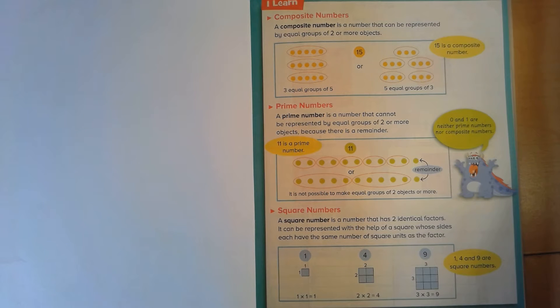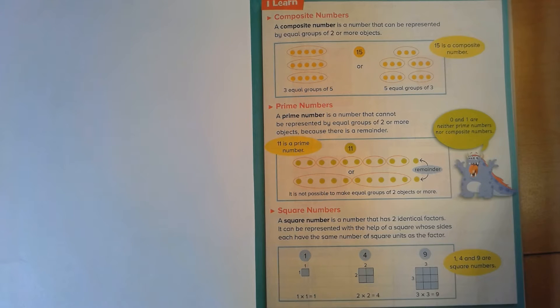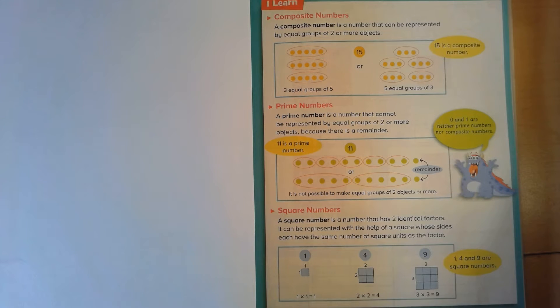Hi there, it's Diane. Welcome to my basement. Today we are just gonna be labeling numbers. We're gonna say if numbers are composite, prime, or square. So what's the first question you should ask yourself? What's a composite number? What's a prime number and what are square numbers? Well, let's find out.